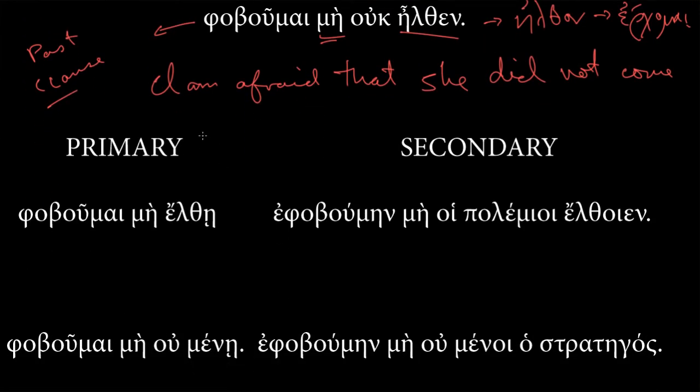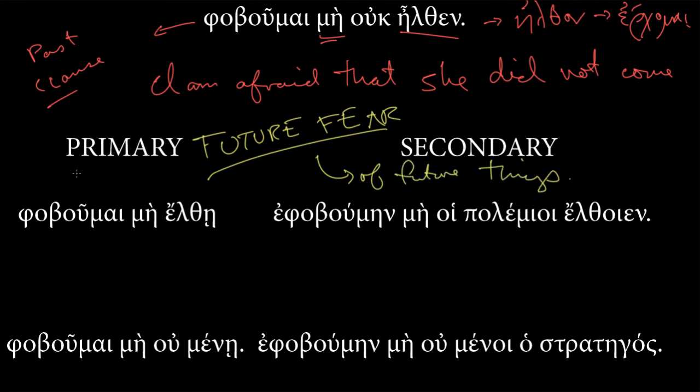And this is also a present fear, but with a kind of past clause. Really, what we're talking about here, when I'm saying present, is the clause, the tense of the verb in the fearing clause. And no, these are both indicative. When we get to the future fears, let me write that out in a different color, future fears. So, this isn't saying that I will be afraid. It's not that the fear itself is in the future, but it's a fear of future things.